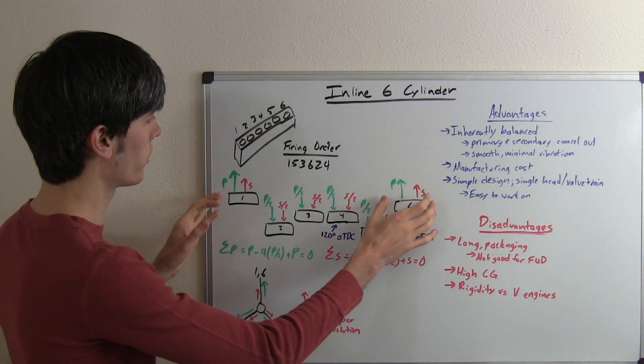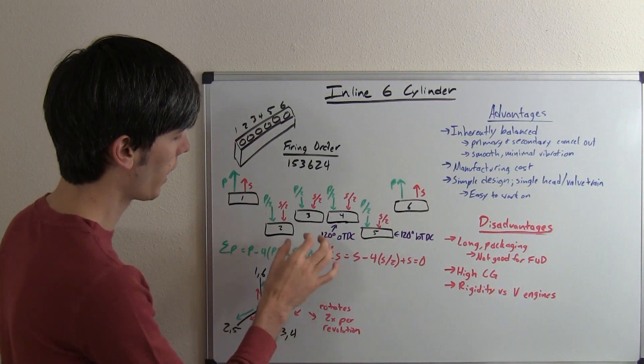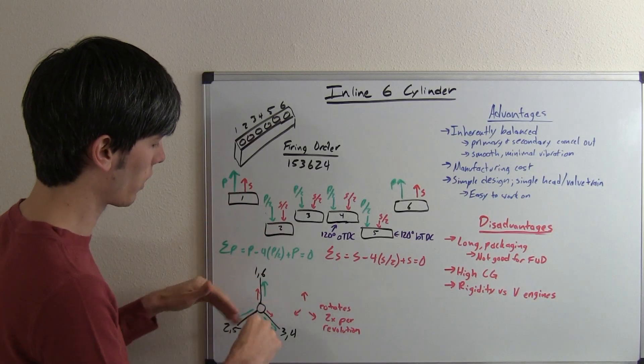So what we've got going on is your primary force is going to be at its largest point for one and six, and then for the rest of your cylinders it's going to be at half of that on its way down.